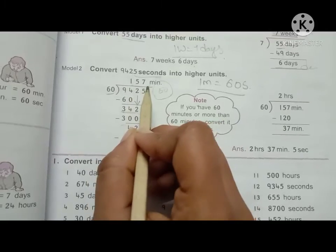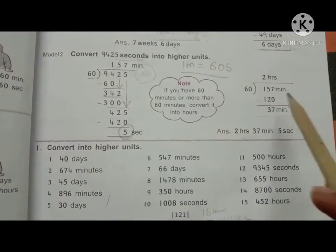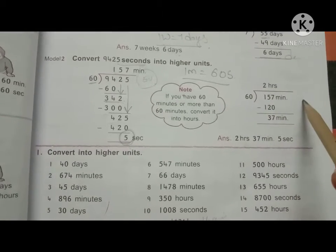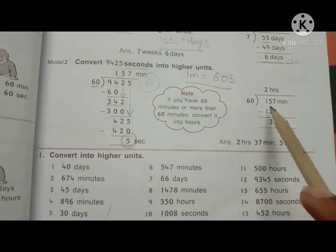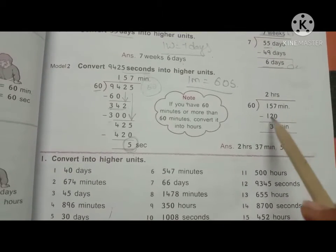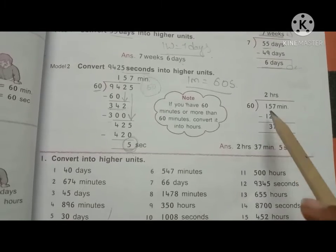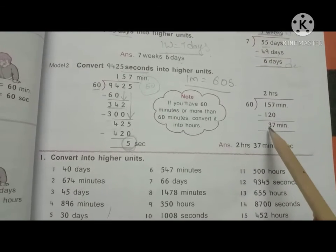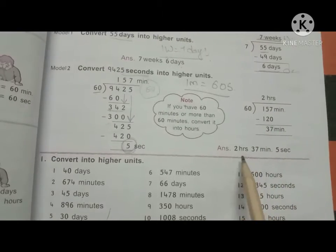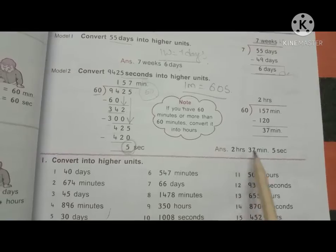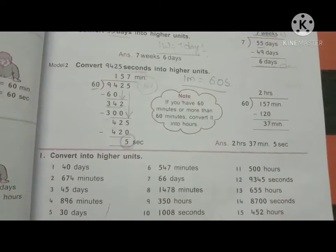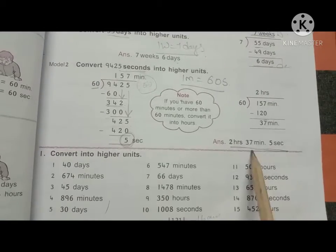We have to convert 157 minutes again. Since 1 hour equals 60 minutes, we divide 157 by 60. 60 times 2 is 120. Subtracting: 157 minus 120, the remainder is 37. So the quotient is 2 hours. The total answer is 2 hours, 37 minutes, and 5 seconds.